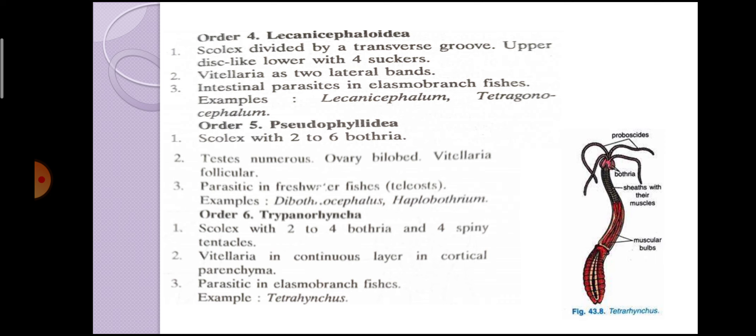The next order is Order Pseudophyllidea. The scolex has two to six bothria. Testes are numerous, ovary is bilobed, and the vitelline area is follicular. They are parasitic in freshwater fishes (teleosts). Examples are Diplocephalus and Haplobothrium.